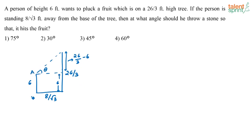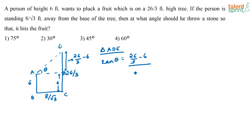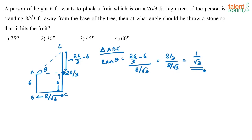Label the figure as A, B, C, D, and E. Considering triangle ADE, tan theta = (26/3 − 6)/(8/√3) = (8/3)/(8/√3) = 1/√3. Therefore theta = 30 degrees, since tan 30° = 1/√3.